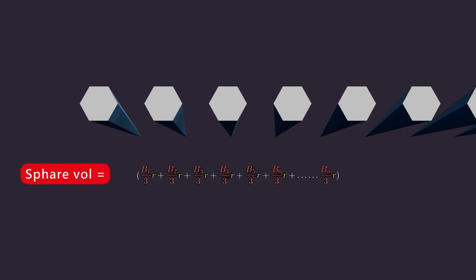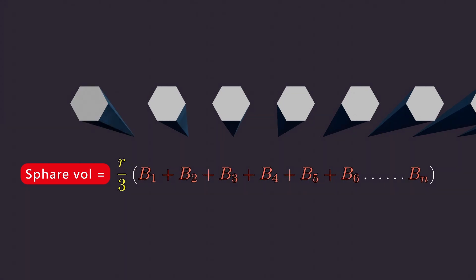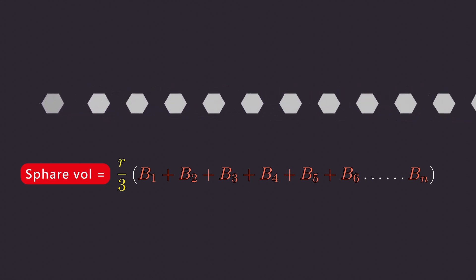By performing mathematical calculations, we find that the formula for the volume of a sphere is equal to one-third of the radius multiplied by the sum of all the base areas of the pyramids.